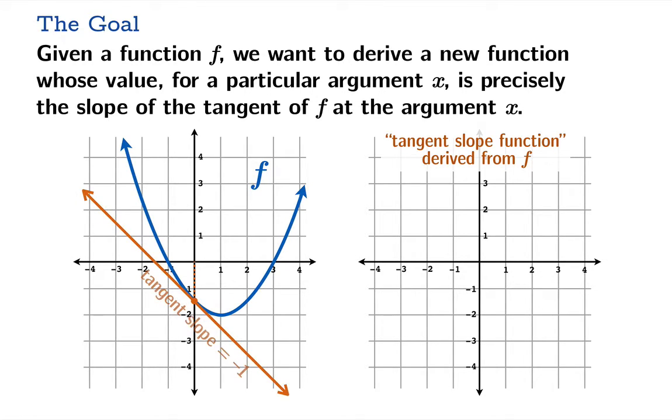How is this function going to work? Well, suppose we're able to calculate the tangent slope at the argument 0 on the left-hand side and we find that that tangent slope is negative 1. Then the value of this derived function should be negative 1. That's how this game is going to work.